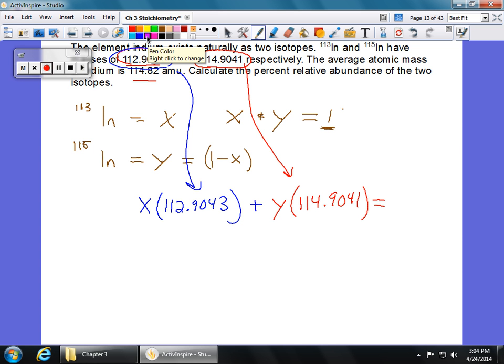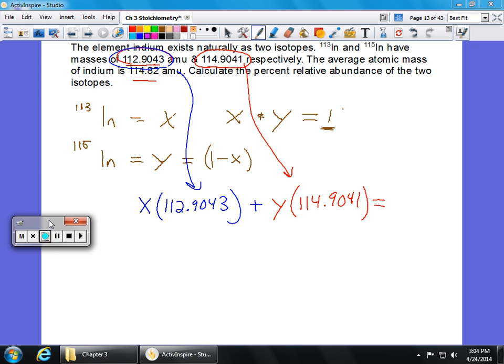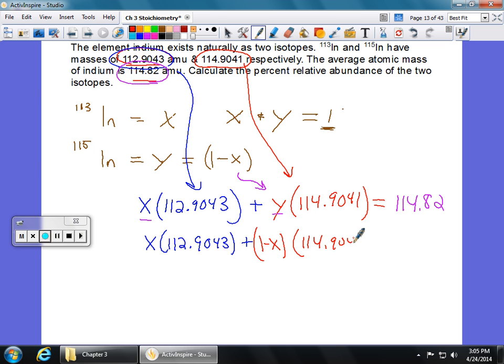We're going to equal the total. And what's the total? Well, it tells us in the problem what the average is. So the average atomic mass is 114.82. That's what we did in the previous problem. We multiplied the relative abundance times the mass, this relative abundance times the mass, and we got the average. So now we just don't know what they are. So what we're going to do is we're going to substitute in the 1 minus x for our y. So I'm going to rewrite this equation. Obviously, this is going to give us still x times 112.9043 plus, well now what do we got here? Now let's expand this out. This is x, or 1 minus x, times 114.9041, and that's going to equal our final 114.82.